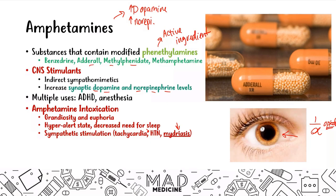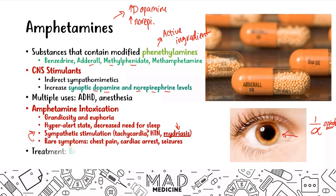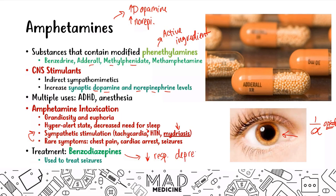The rare symptoms that can occur with amphetamines are chest pain, cardiac arrest, and seizures, primarily because of the sympathetic stimulation occurring. When treating amphetamine intoxication, you're going to use benzodiazepines — a classic CNS downer. Benzodiazepines are used to treat the seizures that can be associated with amphetamines, and unlike barbiturates, they have a decreased risk of respiratory depression.